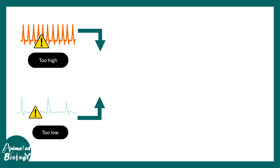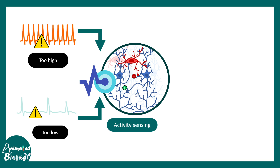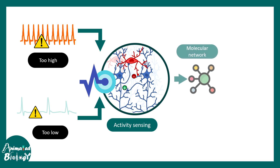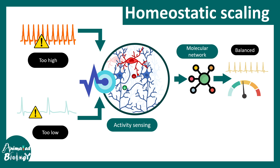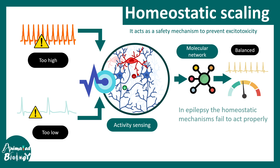Moreover, when there is too high or too low activity in the brain, there are specific sensors which can sense these activity changes and coordinate with molecular networks to enforce activity back to a balanced level. This is known as the homeostatic scaling mechanism in our nervous system, and current research shows that homeostatic scaling mechanism fails when epilepsy happens.